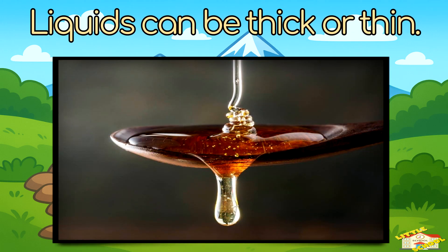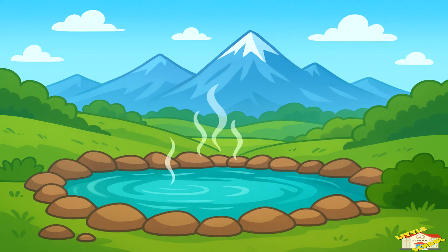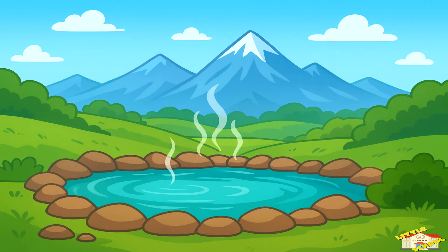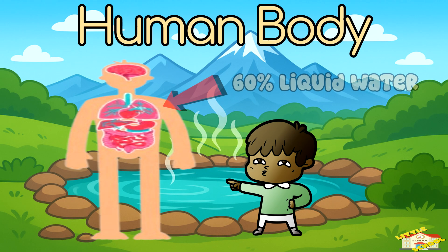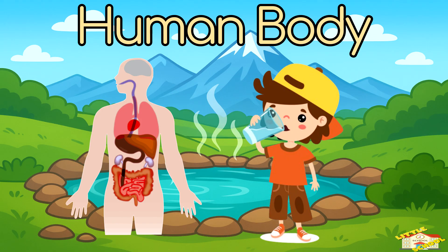Liquids can be thick or thin — honey is thick while water is thin and flows easily. Some liquids can actually turn into gases when heated, like steam from boiling water, and into solids when frozen, like ice. Your body is about 60 percent liquid water. Without liquids, humans and all living things couldn't survive.